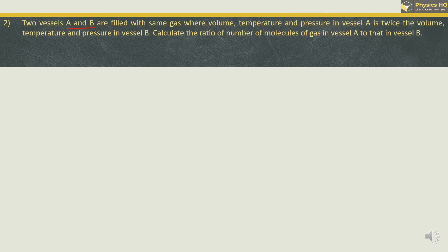Two vessels A and B are filled with the same gas, where volume, temperature, and pressure in vessel A is twice the volume, temperature, and pressure in vessel B. Calculate the ratio of number of molecules of gas in vessel A to vessel B. We will use the equation of gas: PV = nRT. Instead of R, we write Nₐ × K_B, where Nₐ is Avogadro's number and K_B is Boltzmann constant. Small n (number of moles) equals number of molecules divided by Avogadro's number.